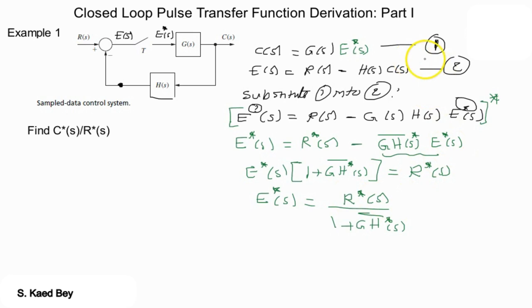And from equation number one substituting E star of s into equation one we get C of s equals to G of s E star of s. What we have obtained now is the continuous output expression.